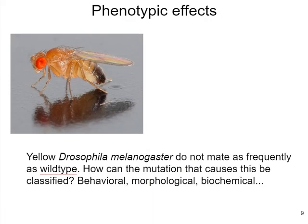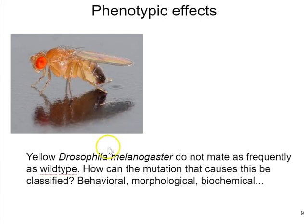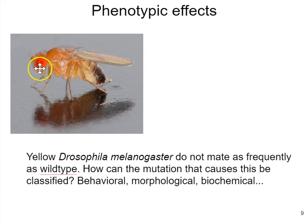When talking about mutations, we also describe their phenotypic effects. Here's a photo of a yellow Drosophila melanogaster, or fruit fly. Normally they're a muddy brown-grayish color, but this one is a golden yellow across its full body — phenotypically different from the standard wild type. That is the result of a mutation in one particular gene. These yellow fruit flies also do not mate as frequently as wild type, so mutations can have behavioral or morphological effects — like changing color — or perhaps biochemical effects, such as differences in neurotransmitter levels.